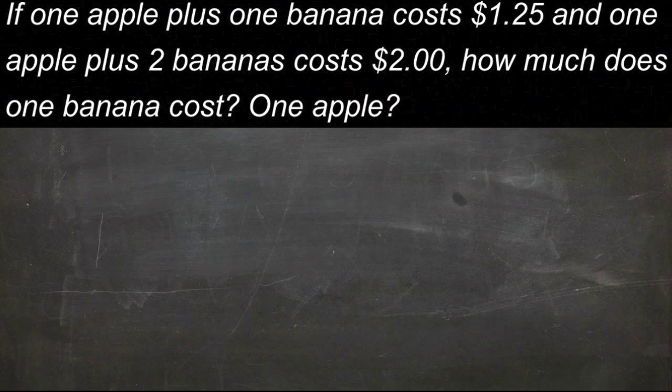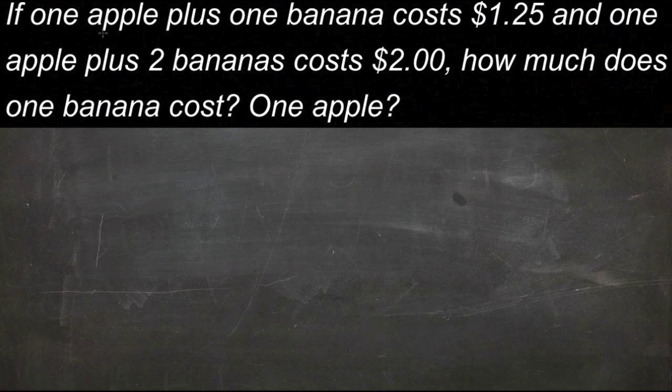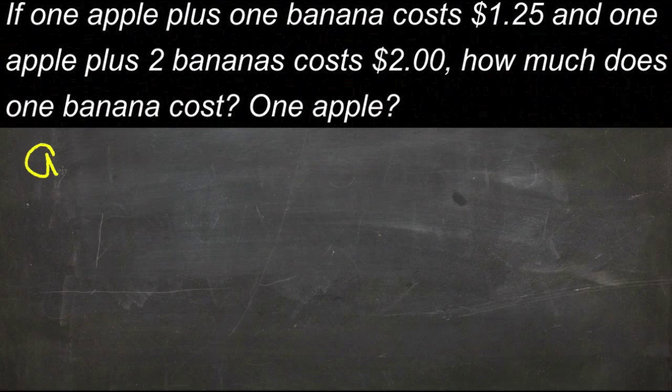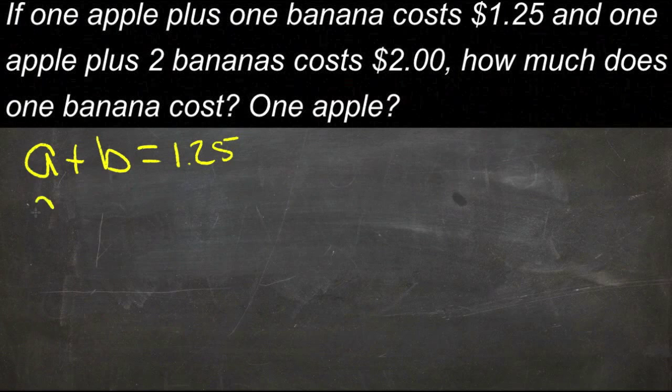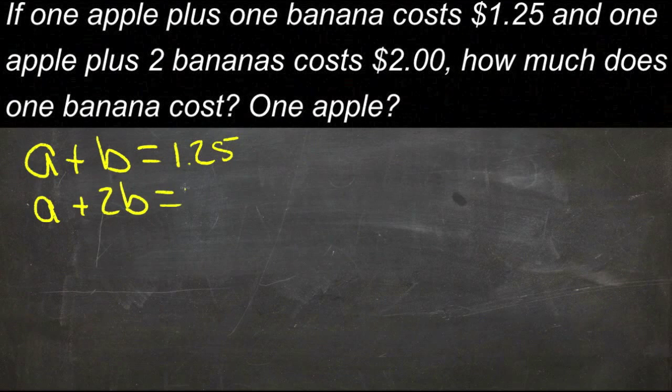So, first let's write down our equations. We know that one apple and one banana cost $1.25. So, one apple plus one banana is $1.25. Then, one apple and two bananas cost $2.